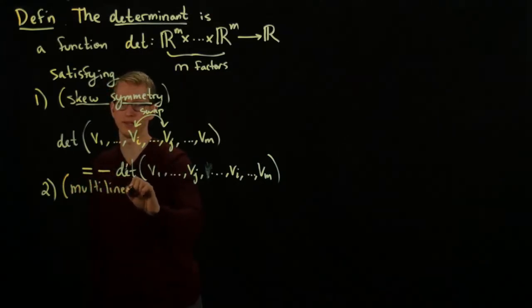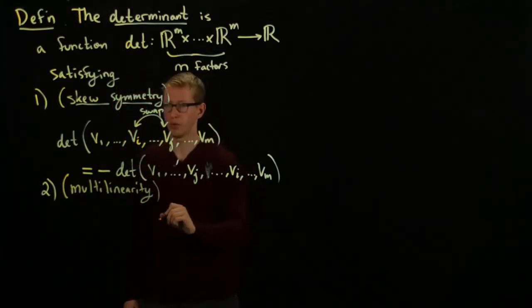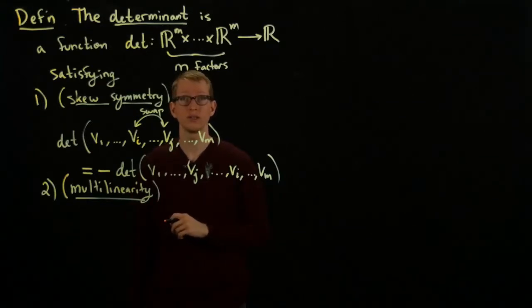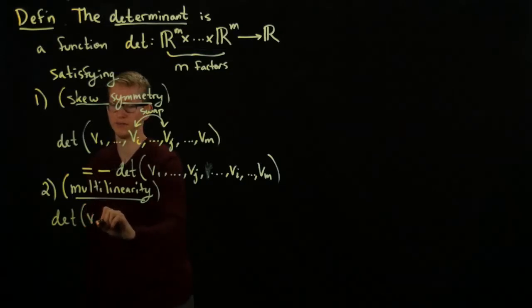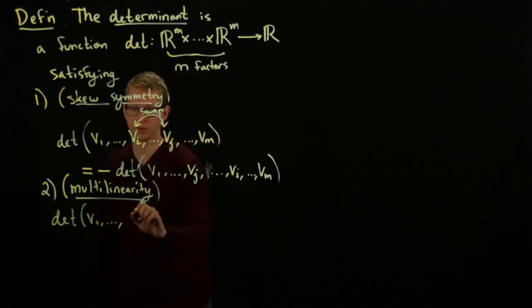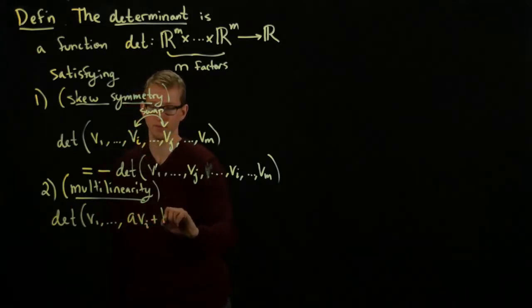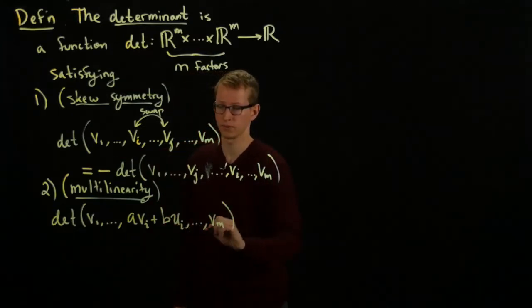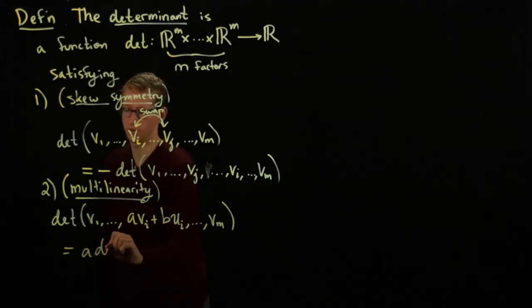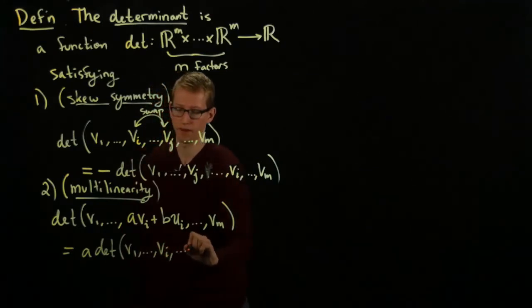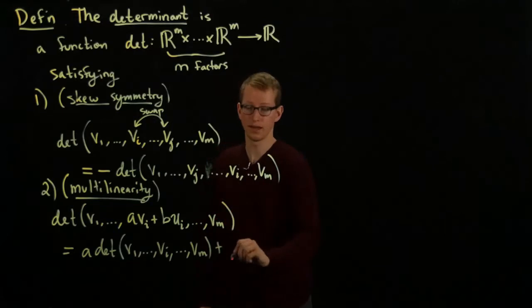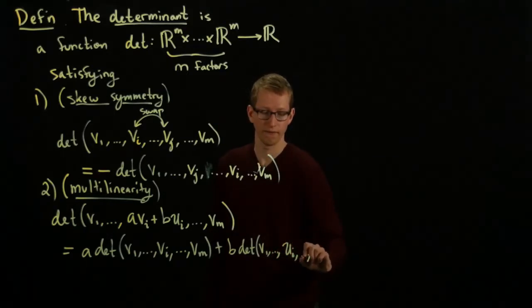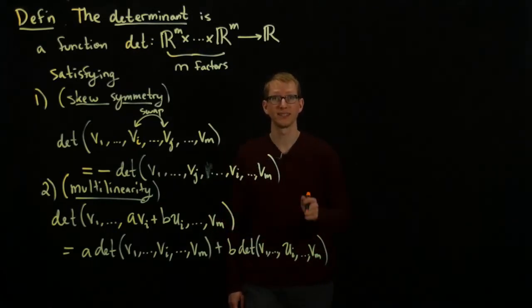The second important condition is multilinearity. Multilinearity says that for any one of its entries, if I write it as a linear combination, then the determinant actually decomposes as a linear combination as well. The determinant of v1 up to a*vi + b*ui up to vm equals a times the determinant v1, vi, vm plus b times the determinant v1, ui, vm. So it's multilinear in the sense that it's linear in each coordinate.